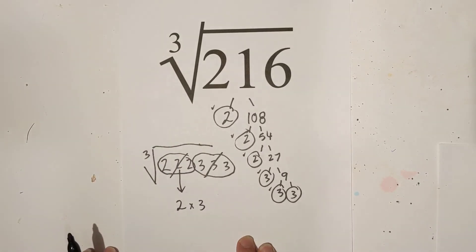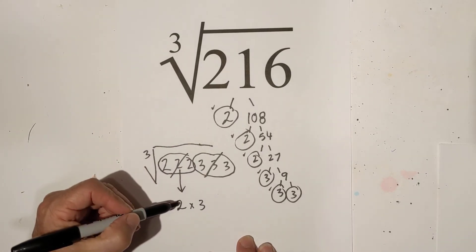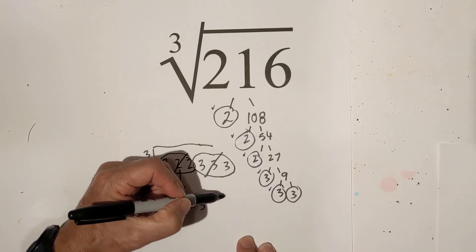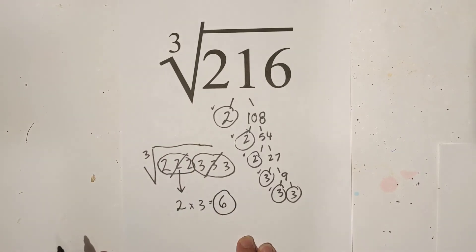And therefore I have nothing left under the cube root sign so now I just multiply two times three and that is six. So the cube root of 216 is six. Remember kindness multiplies kindness, be kind to someone today.